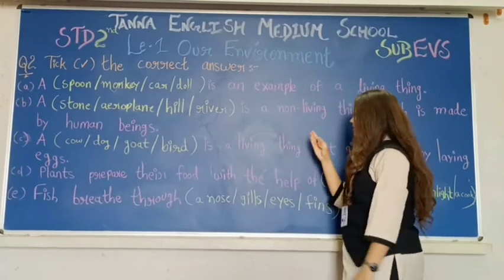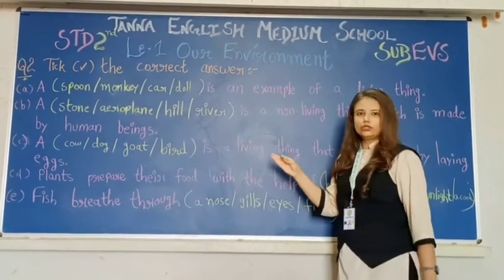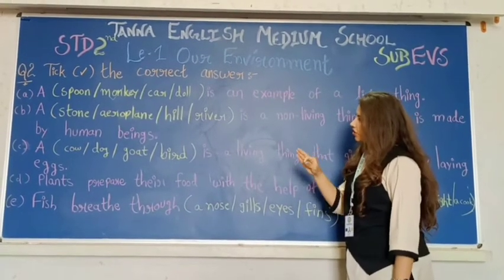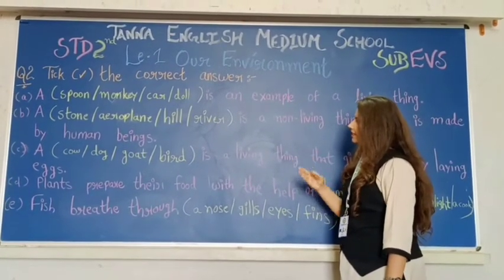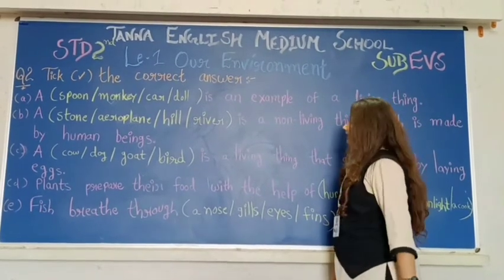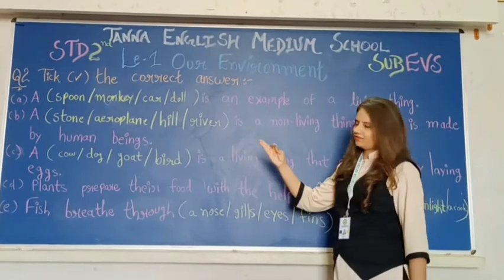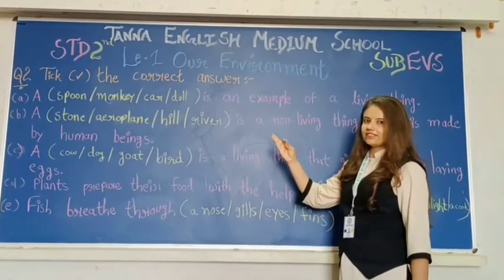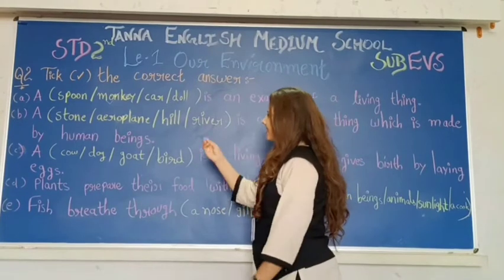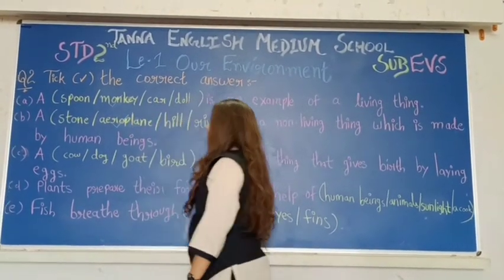A dash is a non-living thing which is made by human beings. Your options are stone, aeroplane, hill, river. So now tell me — which of these is made by human beings? Stone? No. Aeroplane? Of course, yes. So your answer is aeroplane. We will write aeroplane.